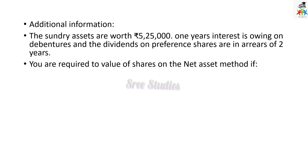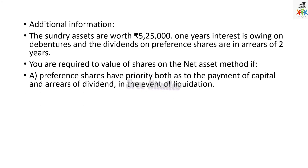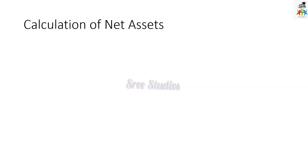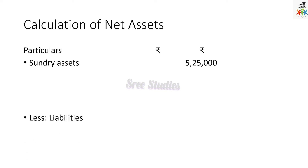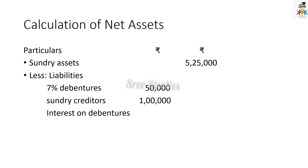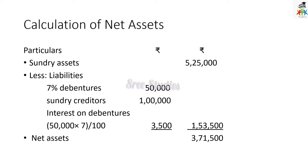You are required to calculate the value of shares by the Net Assets Method. There are 4 options given; for all options we have to prepare the value of shares. First, we calculate net asset particulars: sundry assets as given in the adjustment is 5,25,000, and we reduce the liabilities — 7% debentures and sundry creditors. We calculate interest on debentures: Rs. 50,000 at 7% gives Rs. 3,500. Net asset is 3,71,500.